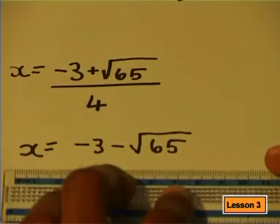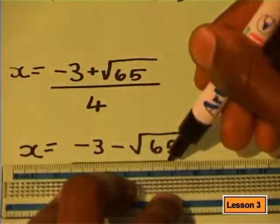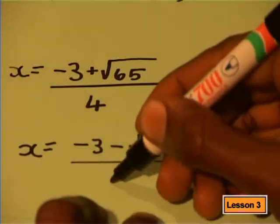minus 3 plus or minus the square root of 65, all divided by 4.